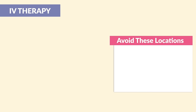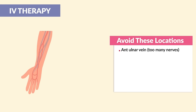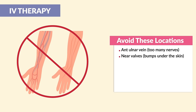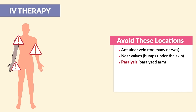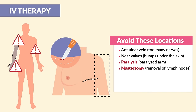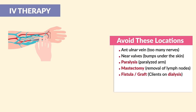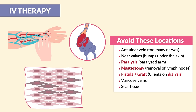Now switching gears to short-term peripheral IVs — we want to avoid these locations: the anterior ulnar vein, as there are too many nerves or even valves nearby. You can see bumps under the skin inside a vein, which indicates a valve most often. Also avoid a paralyzed arm, clients with mastectomy who have had removal of breast tissue and lymph nodes, clients with a fistula or grafts (typically those on dialysis in end-stage renal failure), and lastly varicose veins and scar tissue areas.